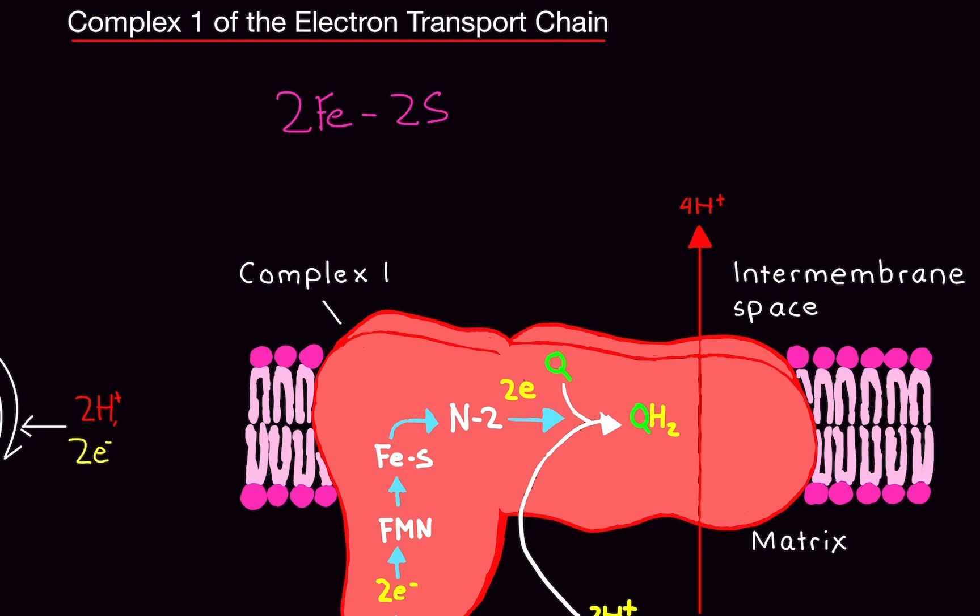Or the other configuration is four iron molecules and four sulfur molecules. Basically they're just attached to each other. And when they're attached in a certain conformation, they're really good at holding electrons and transferring them. That's all you need to know.